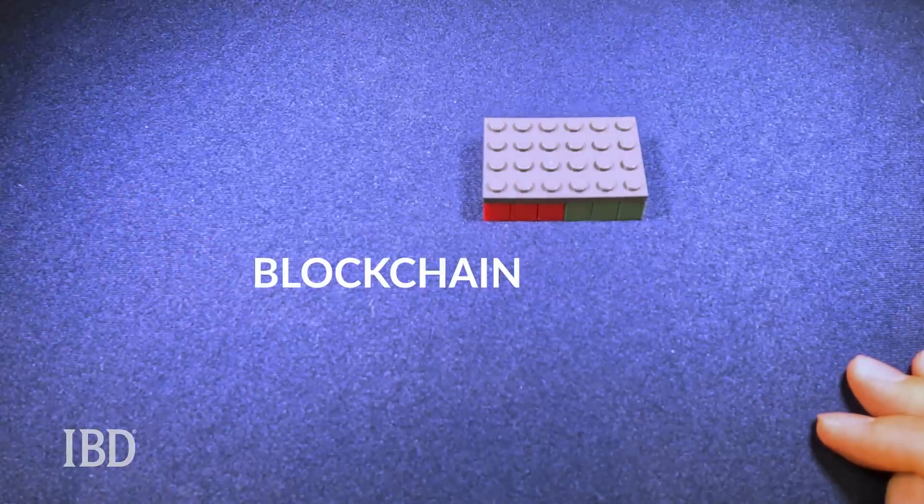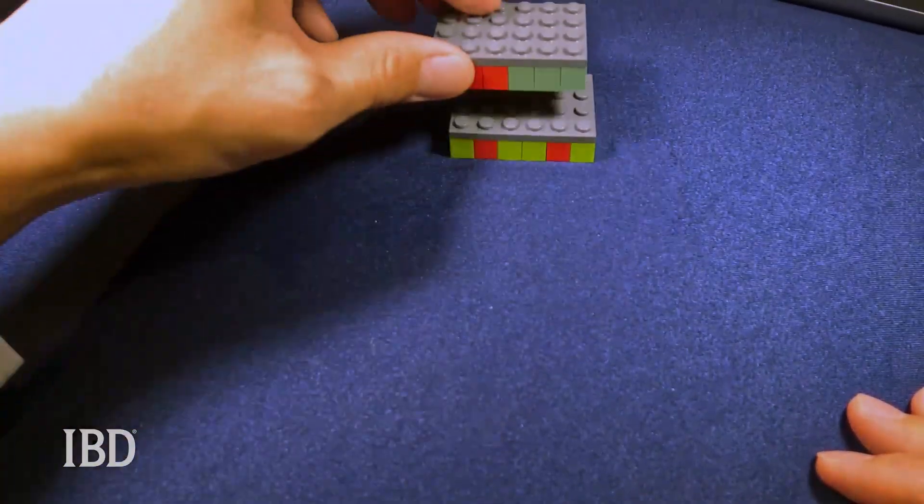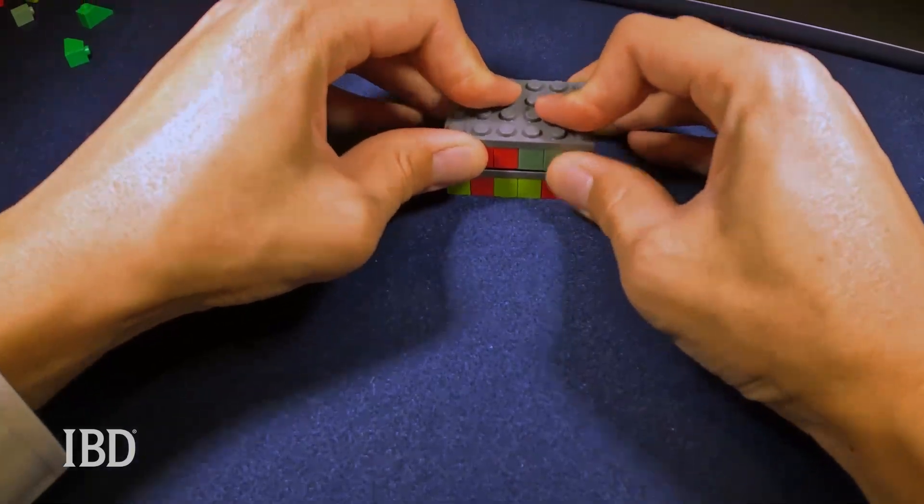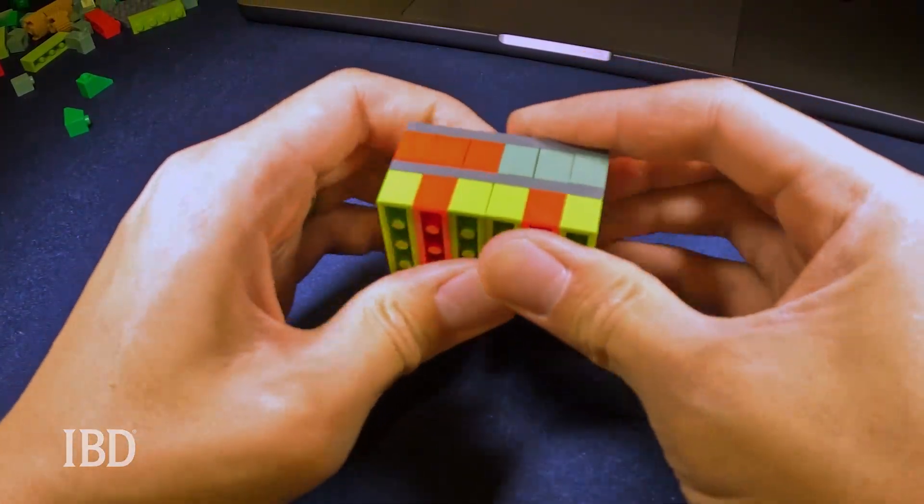Once a validated block is added to the blockchain, the hash from that valid block is used to encrypt the next potential block. This means all subsequent transactions contain an encrypted record of previous transactions, effectively verifying itself.